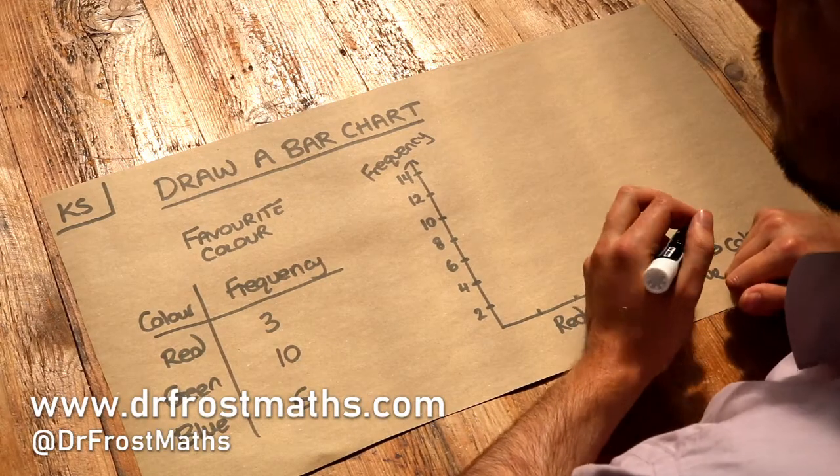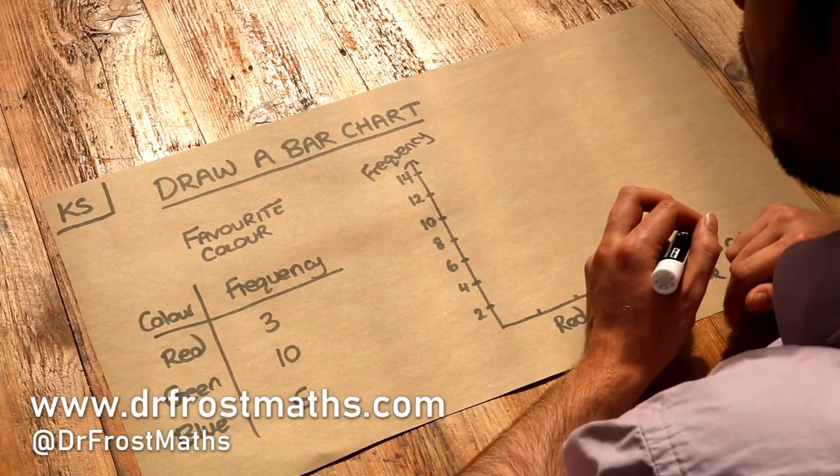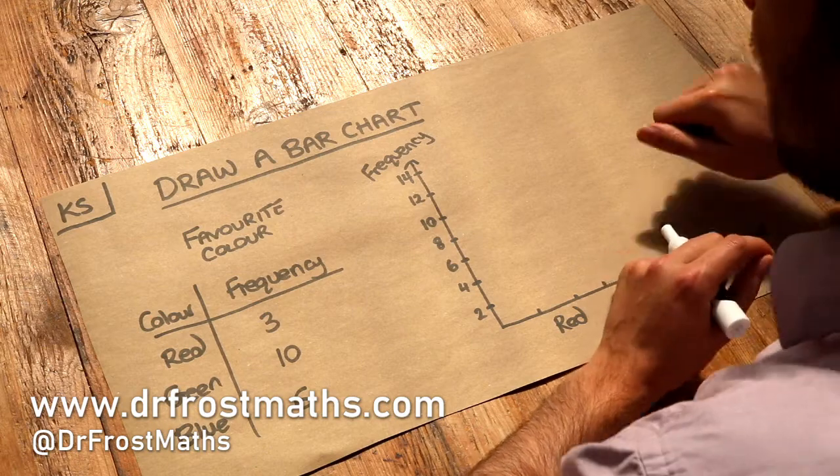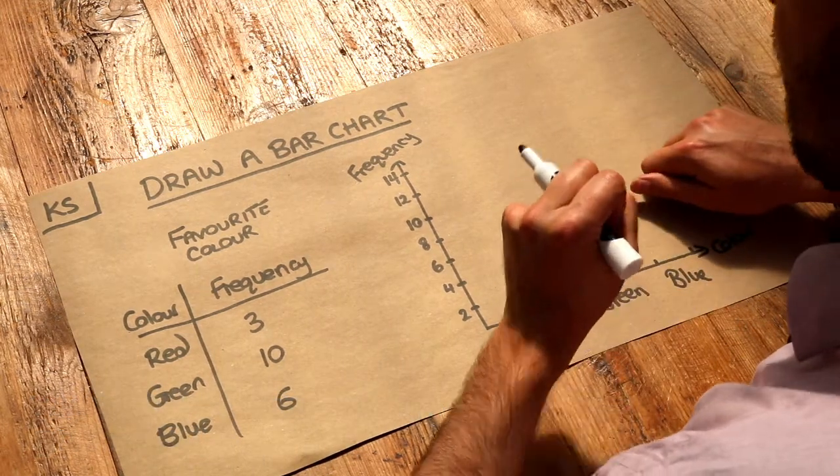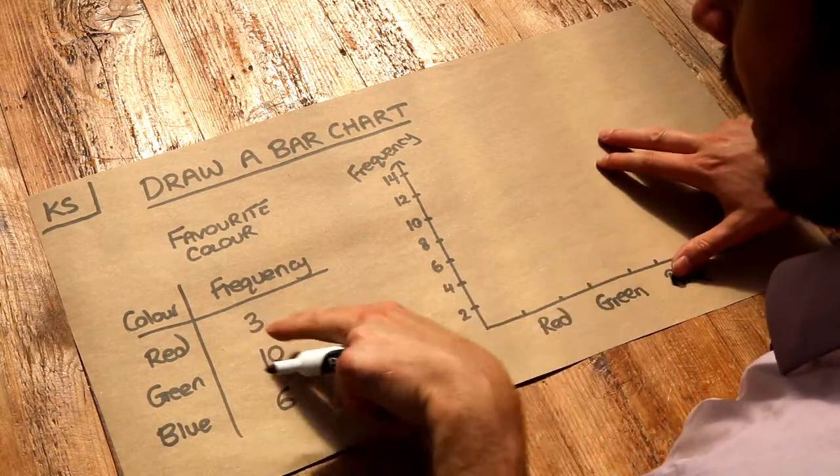Hello and welcome to this Dr Frost Maths key skill video on drawing a bar chart. Now a bar chart is an example of a frequency diagram. Frequency just means how many we have of each thing.